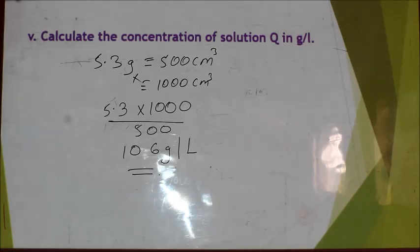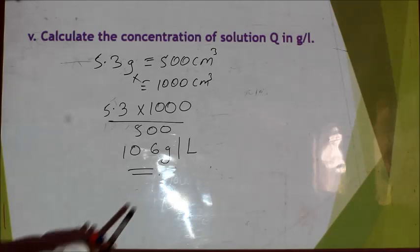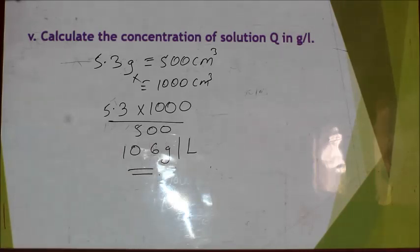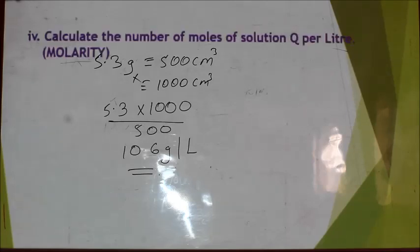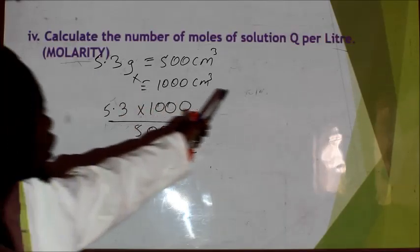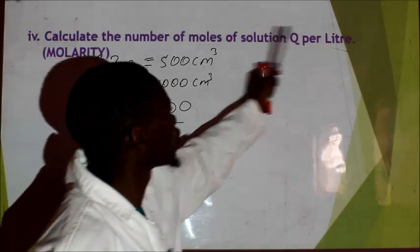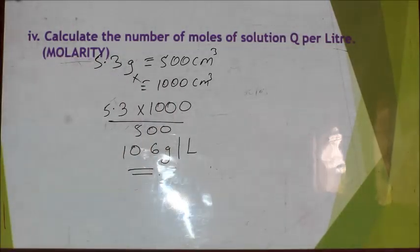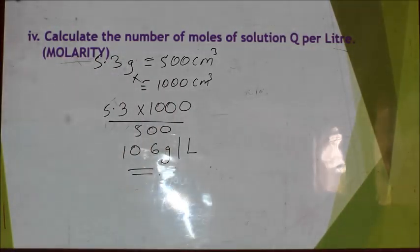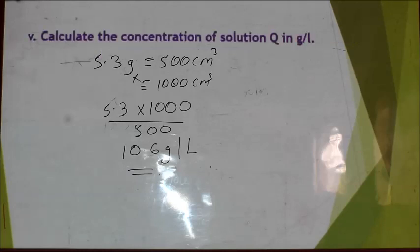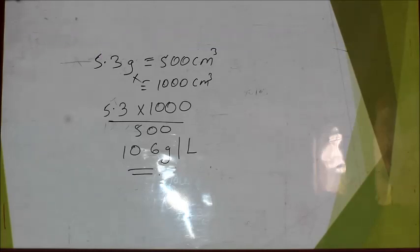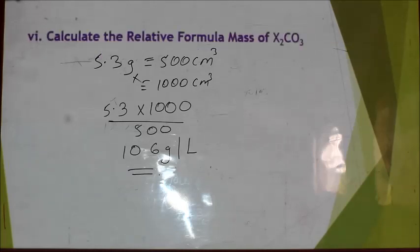So the concentration is 10.6 grams per liter. Note that concentration can be expressed in two ways: in grams per liter, as done in this question, or in moles per liter as done in question 4. We now have both forms of concentration for solution Q.